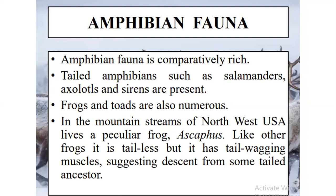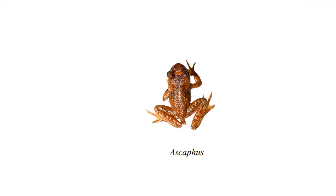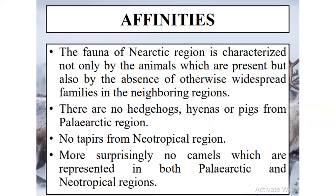Amphibian fauna is comparatively rich. Tailed amphibians are also present, and frogs and toads are numerous. In the mountain streams of northwest USA, there are some peculiar species of frog. Ascaphus is present here, which has a rudimentary tail, indicating that the ancestors of Ascaphus were tailed. It subsequently reduced its tail and developed limbs according to its environment and mode of movement.